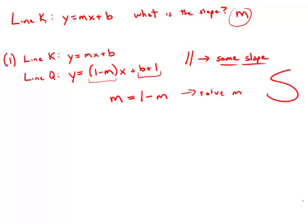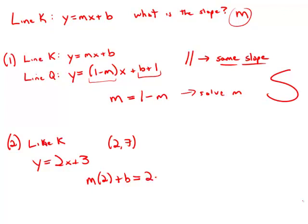Now forget statement number one. Statement number two tells us that line k intersects the line y equals 2x plus 3 at the point 2 comma 7. That means if we plugged in x equals 2, we'd get m times 2 plus b equals 2 times 2 plus 3, or in other words 7.